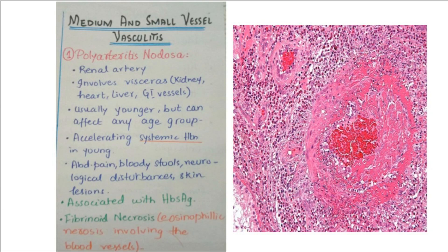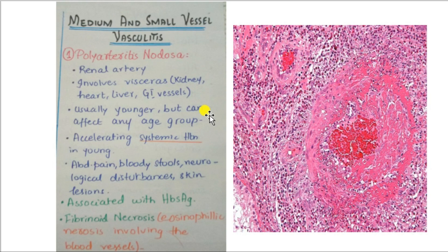The first medium and small vessel vasculitis is polyarteritis nodosa. Polyarteritis nodosa is a systemic vasculitis of small or medium-sized muscular arteries. The most common arteries involved are the renal and visceral vessels, and it typically spares the pulmonary circulation. Other visceral vessels involved, besides the kidney, can include the heart, liver, and GI vessels, in descending order.